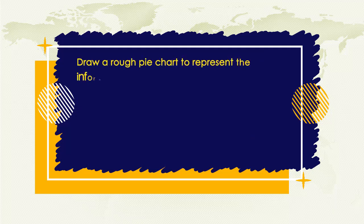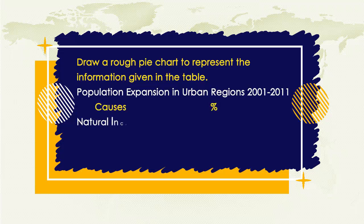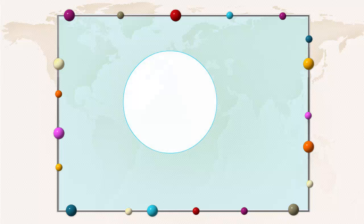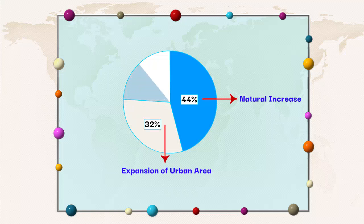Draw a rough pie chart to represent the information given in the table on population expansion in urban regions, 2001–2011. Causes and percentages: Natural increase 44%, Expansion of urban area 32%, Migration 24%.